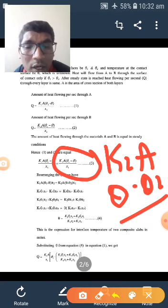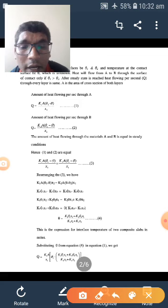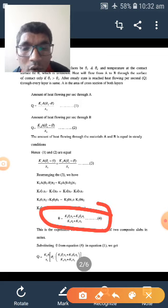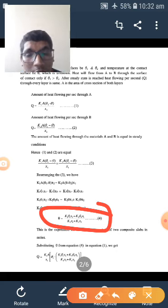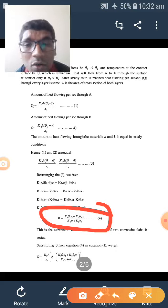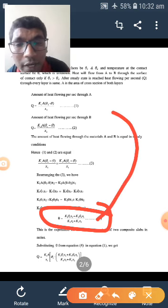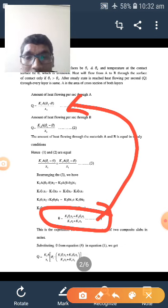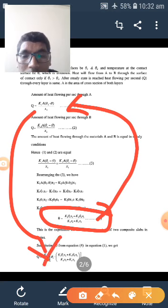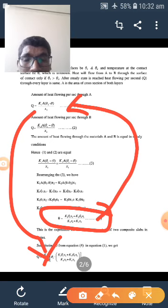The final expression for theta will be k1 theta 1 x2 plus k2 theta 2 x1 divided by k2 x1 plus k1 x2. Now what I am going to do is substitute the value of theta in expression 1, so this expression becomes Q equals k1 by x1 into theta 1 minus this.